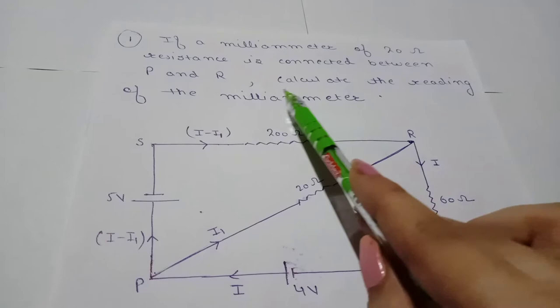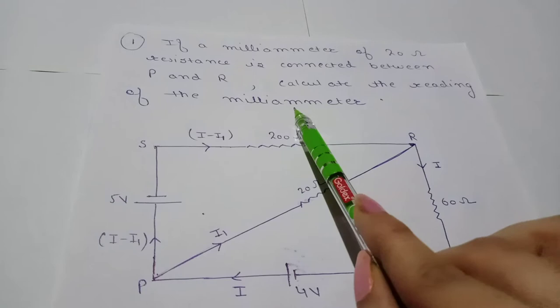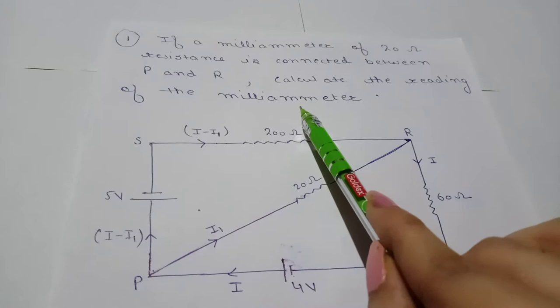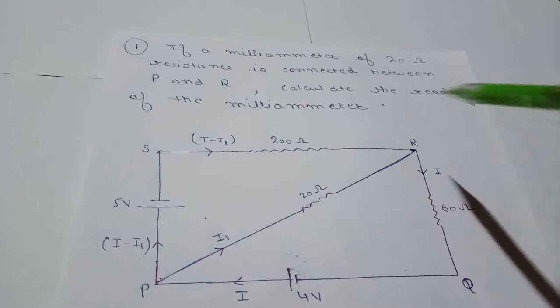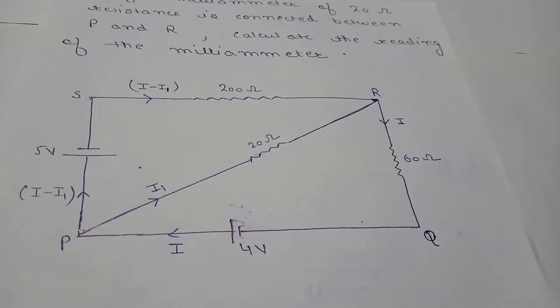A milliammeter of 20 ohm resistance is connected between P and R. We need to calculate the reading of the milliammeter. The ammeter gives us the value of current, so we need to find the current through the 20 ohm resistance. We will first assign currents drawn from each cell.